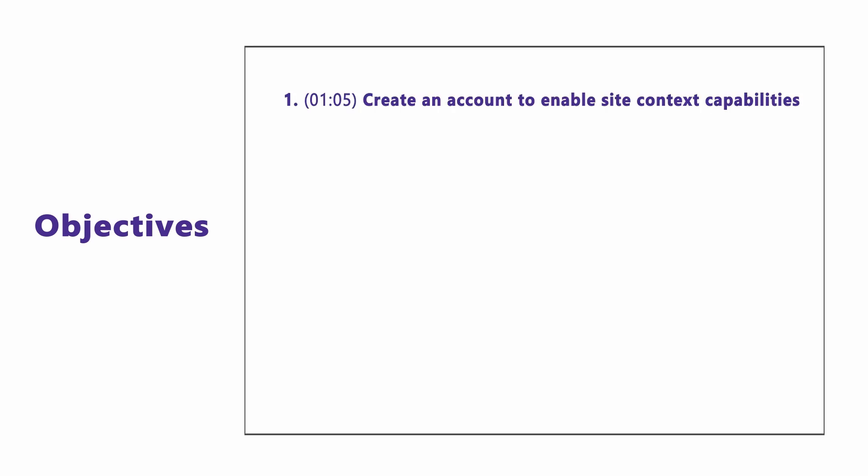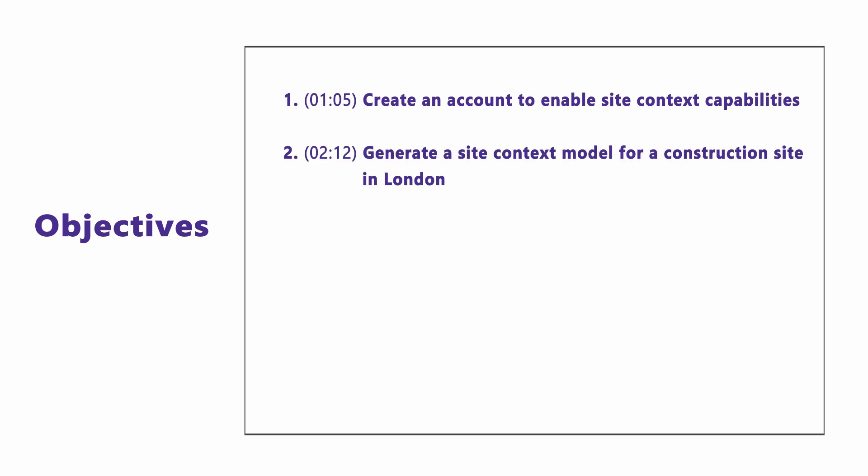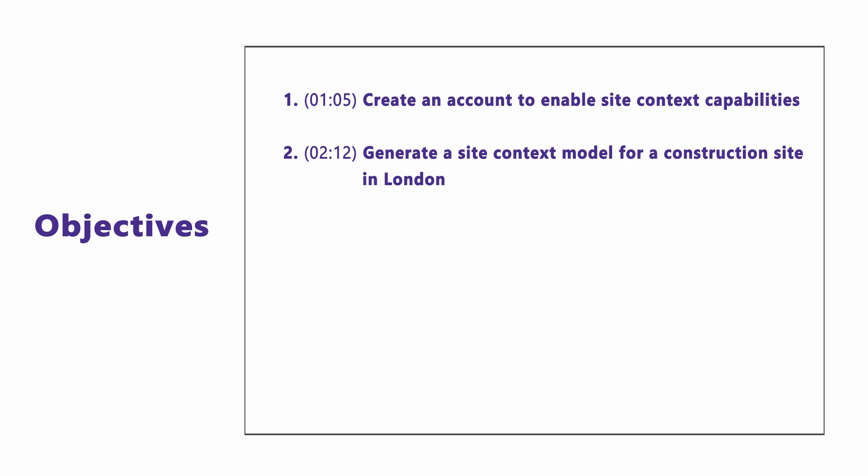To begin, we will walk through the steps to create an account to activate the site context feature. Next, generate a site context for a construction site located in London. Following that, we will explore various map settings, increase the size of the 3D map generated, and define the boundary of the construction site. Lastly, we will edit the site surroundings using the brush tool to refine and customize the site context for effective planning.